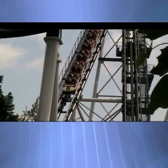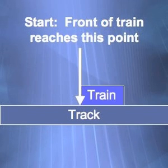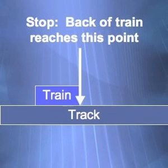When the train is released, start timing as soon as the front of the car reaches that point. Stop timing as soon as the back of the train reaches that point. Repeat this measurement at least 5 times and take the average of your measurements.